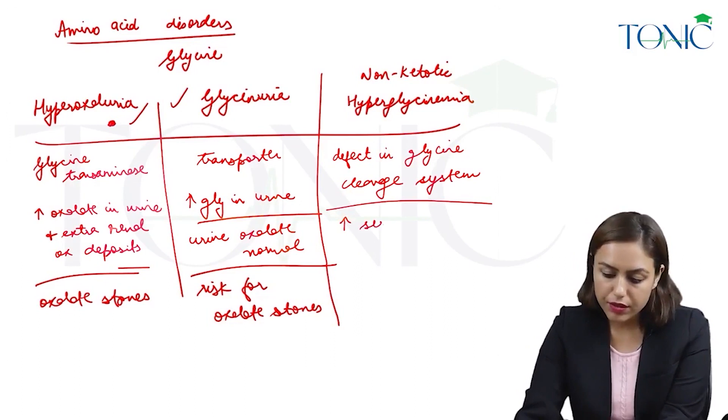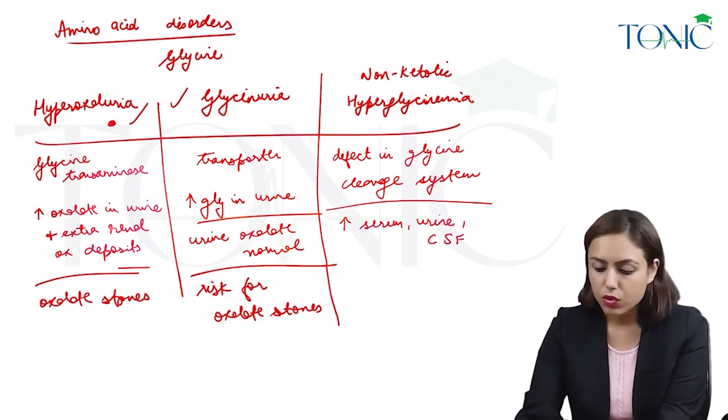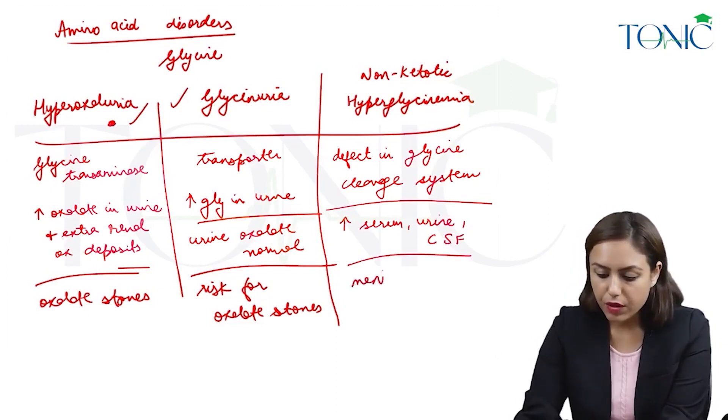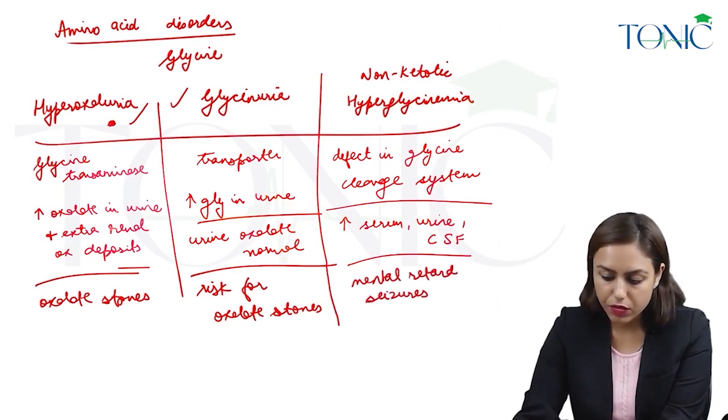So there is increased glycine in serum, in urine and in CSF. So, brain will be affected. These patients have mental retardation, seizures, etcetera.